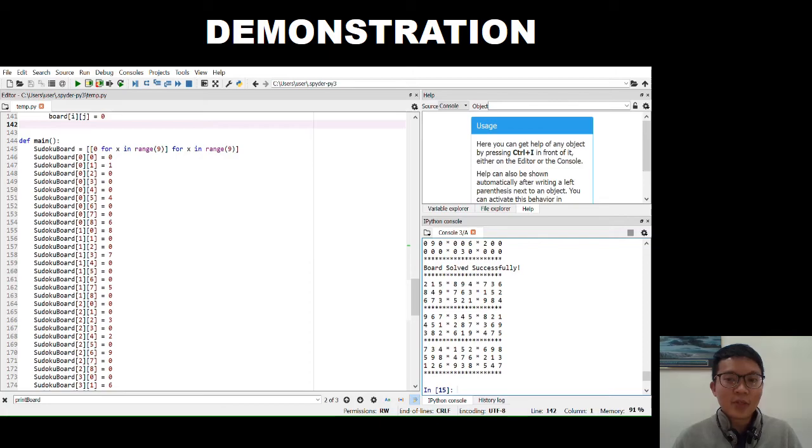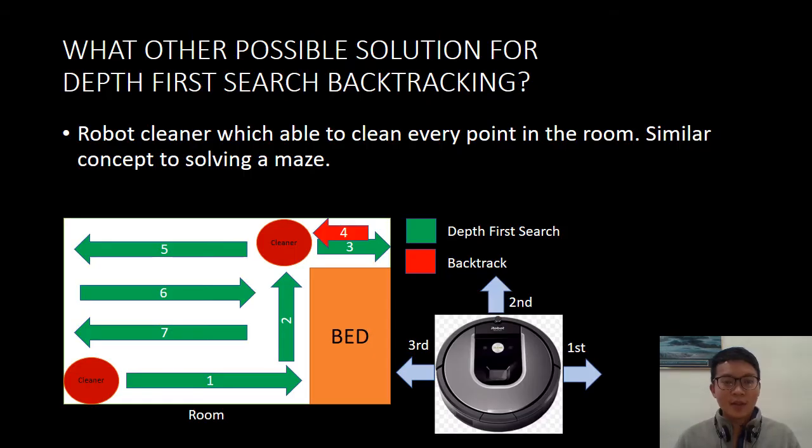What's other possible solution for depth-first search backtracking? One of the applications will be a robot cleaner which is able to clean every point in the room. It's similar concept to solving a maze. Basically it's searching for every possible new direction according to priority. Priority first will be go to the right, then go to the front, and go to the left.